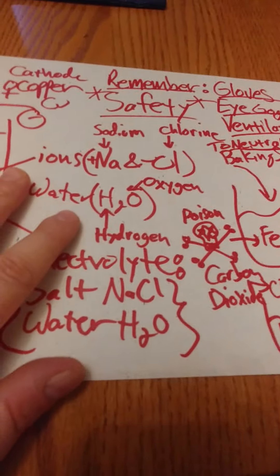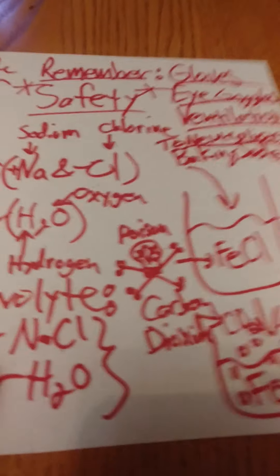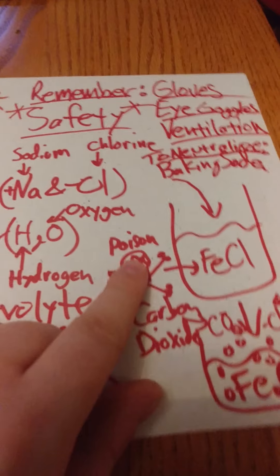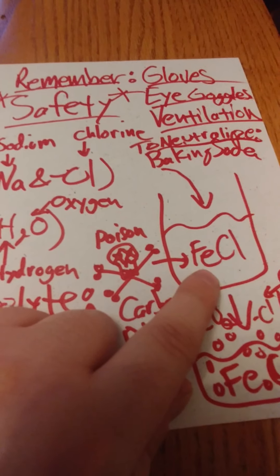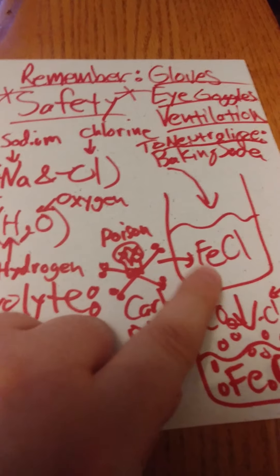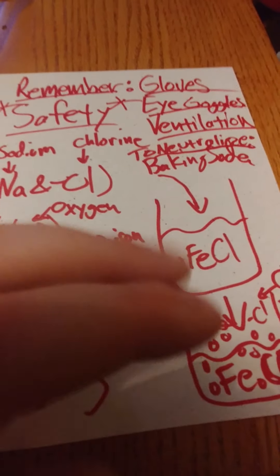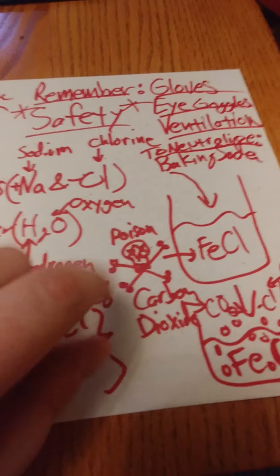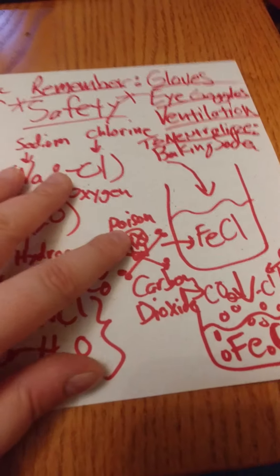And then, later on, we're going to have to neutralize the solution to dispose of it when we're done with the process. And just to note, the iron chloride is poisonous. It's actually used as an etching solution in some instances. And you shouldn't drink it and you shouldn't expose it to your bare skin, like with your hands, and you shouldn't be in an enclosed space with it. You should always have good ventilation.